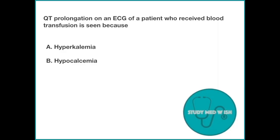Question 3. QT prolongation on an ECG of a patient who received blood transfusion is seen because: Option A, hyperkalemia. Option B, hypocalcemia. The answer to this question is hypocalcemia.